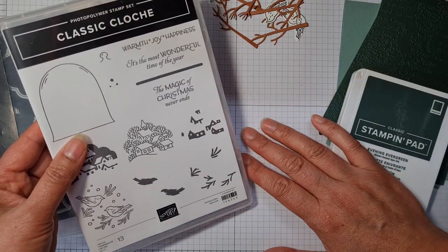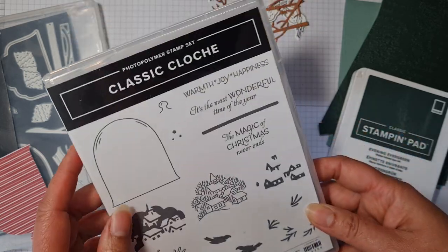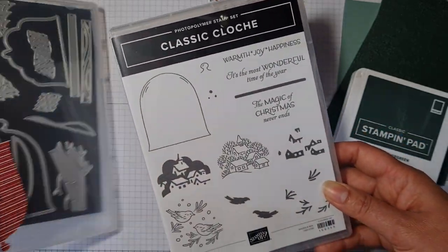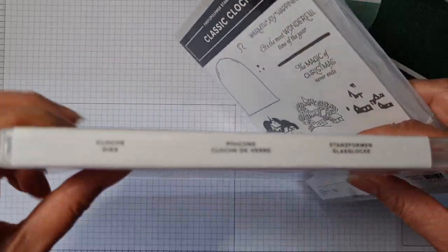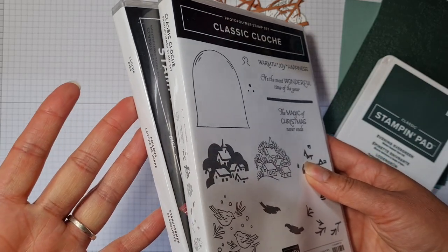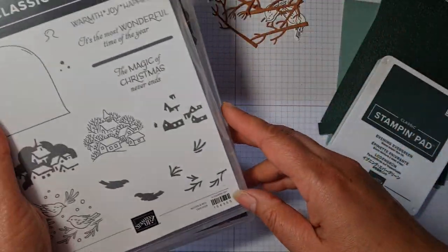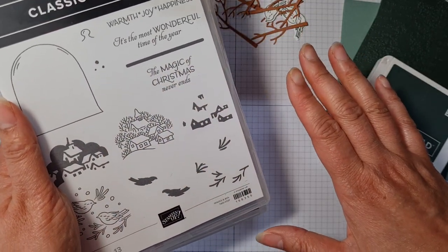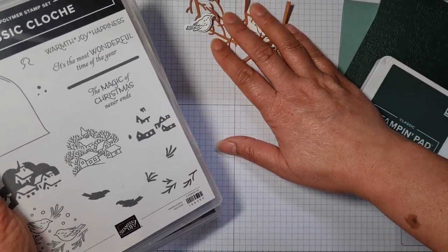Now you can interpret that however you wish. I'm going to be using these really cute little birds from Classic Cloche. I've got the dies here as well, called the Cloche dies, and you can purchase them as a bundle. They're in the current mini catalogue that lasts till December and there's lots more you can do with this.